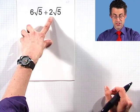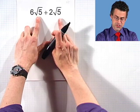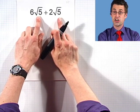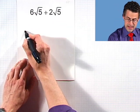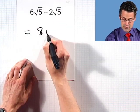Six square root of five plus two square roots of five. Since those square roots are the same, these are like terms. So I've got six square roots of five plus two square roots of five. I can add them together and just say I have eight square roots of five.